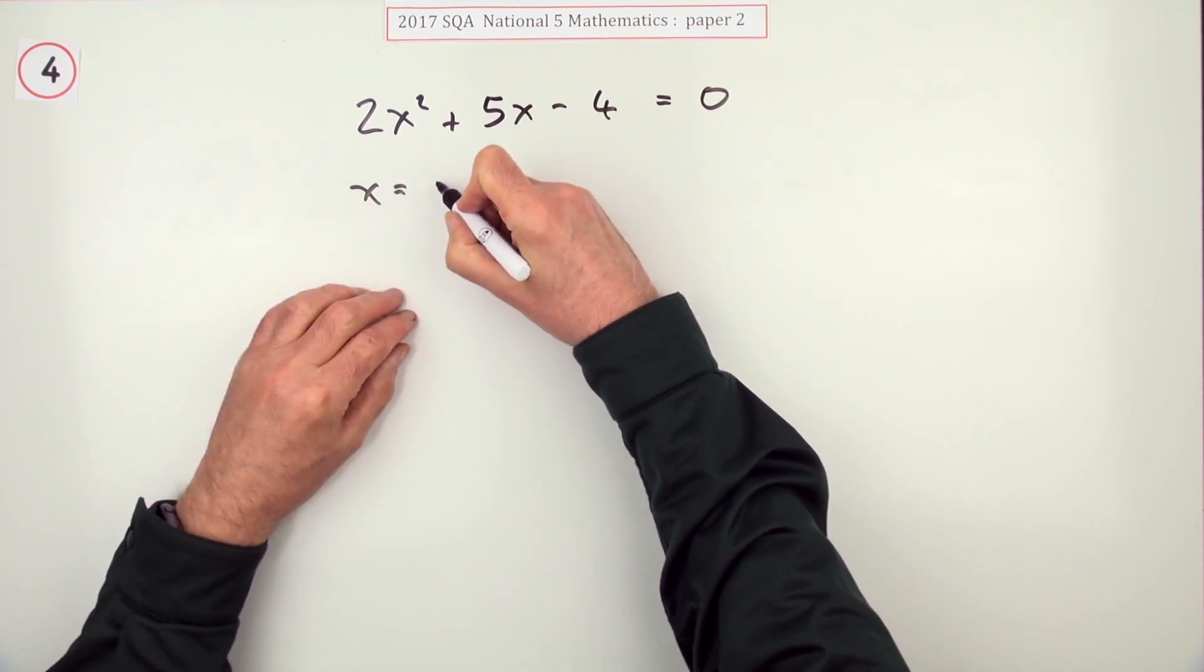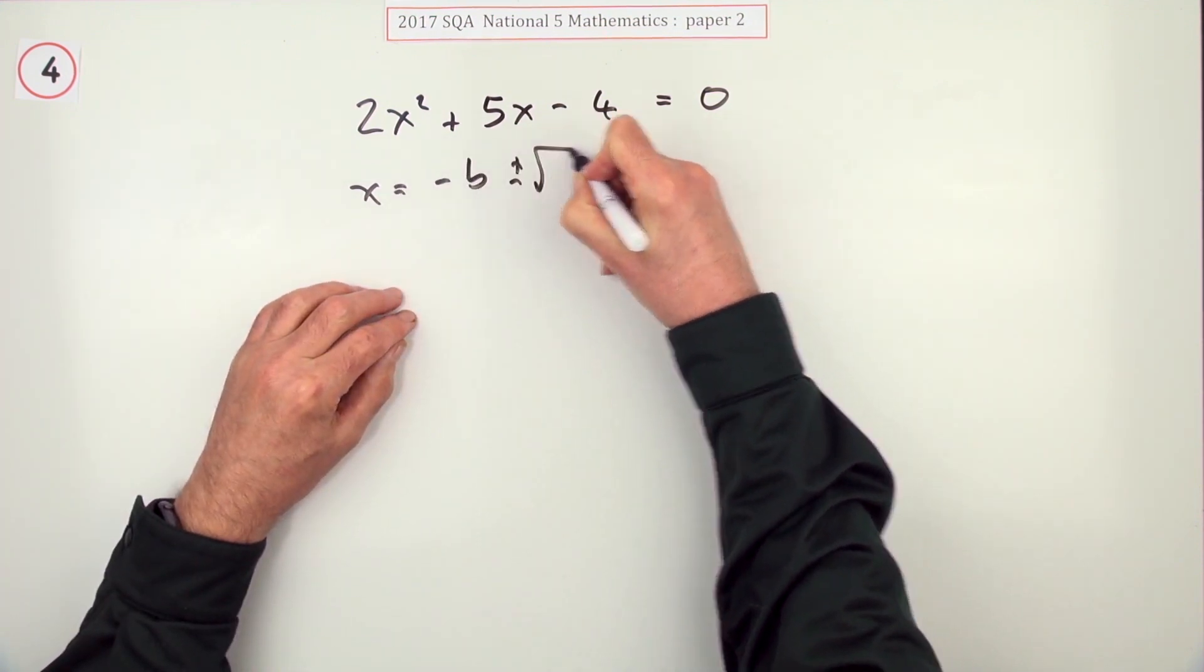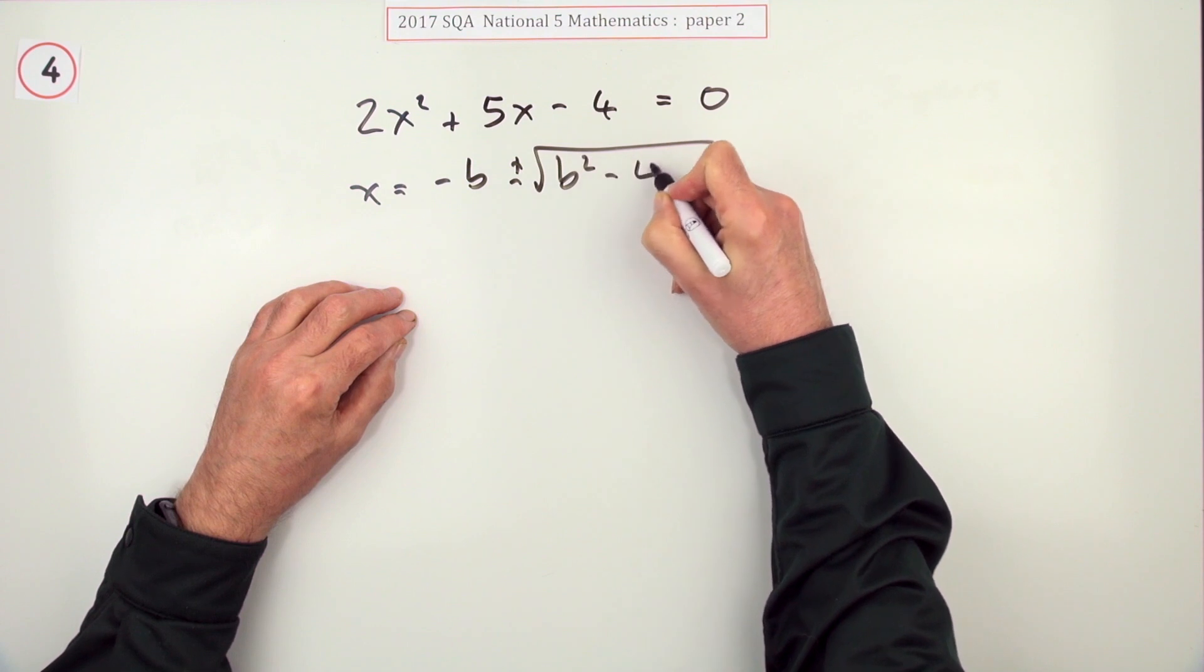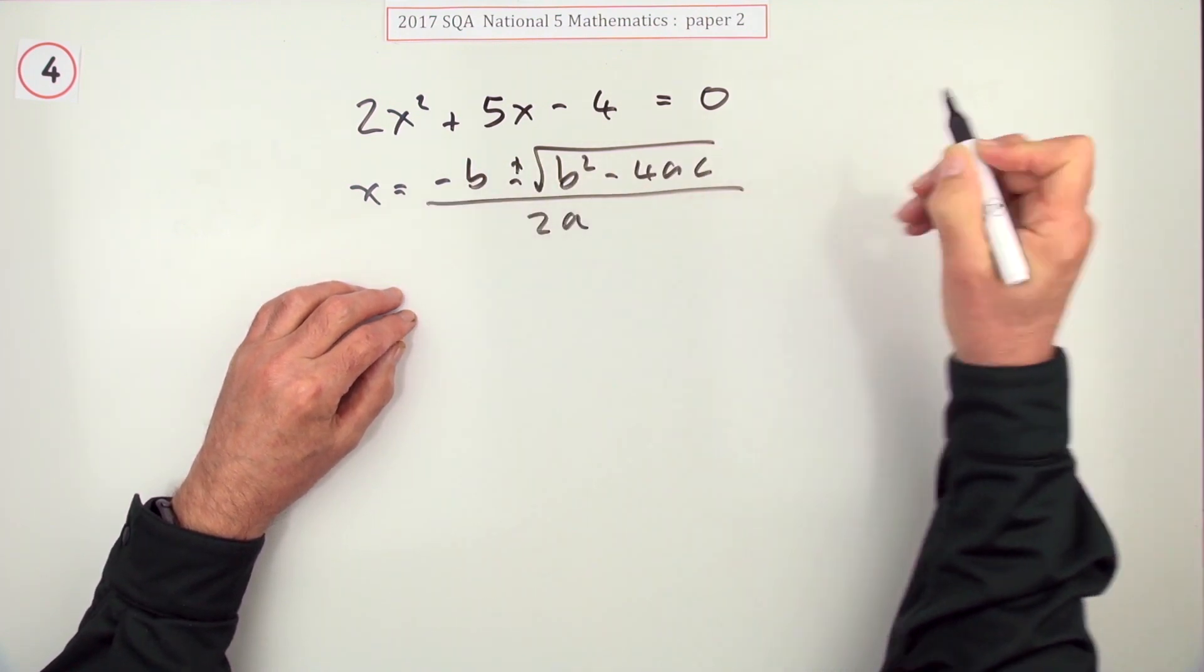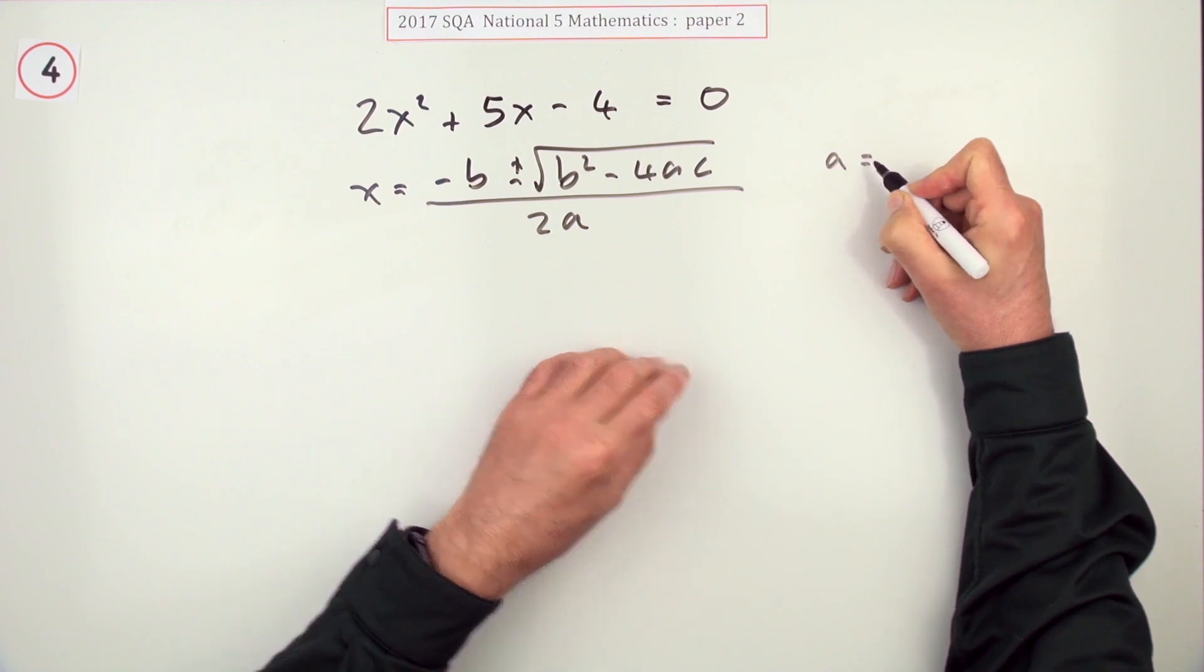Write the quadratic formula straight away. If you can't remember it, look up the front. Negative b plus or minus the square root of b² - 4ac, all over 2a. Probably just take a note to confirm it.